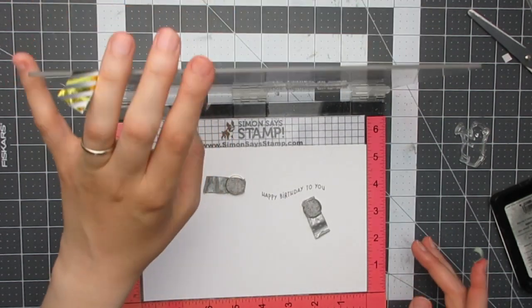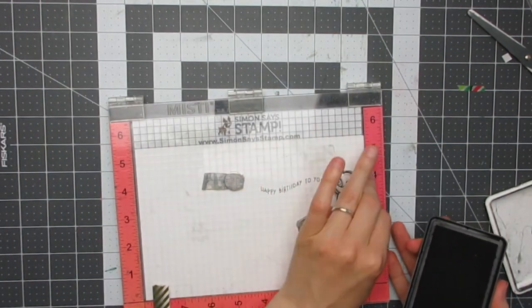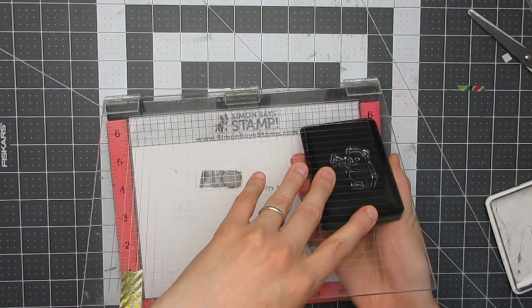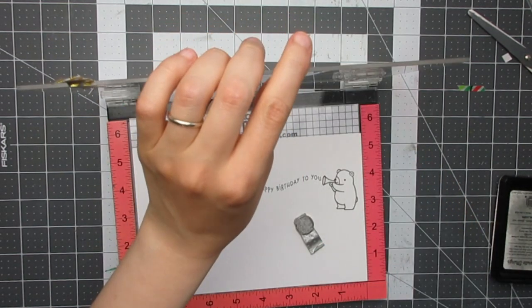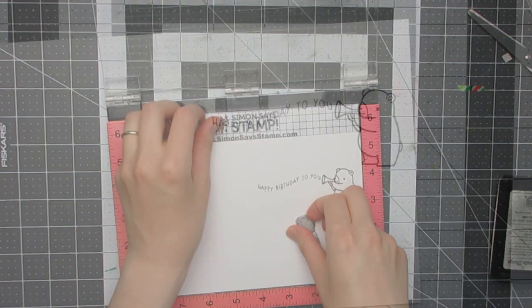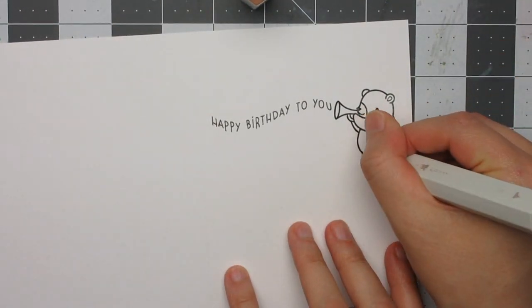Once I had that stamped down, I removed the stamp and put the bear with the little horn and stamped him down next to it as if the sentiment is coming out of the horn. I've done my stamping with MFT Black Licorice Hybrid ink which is alcohol marker friendly.